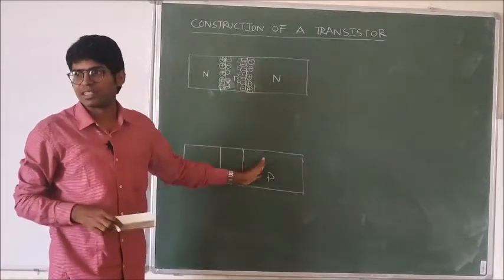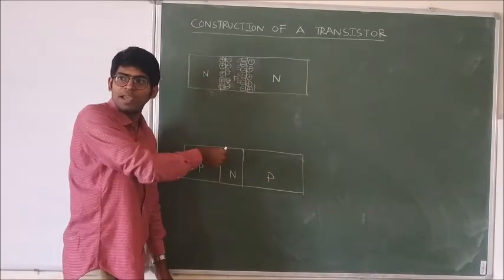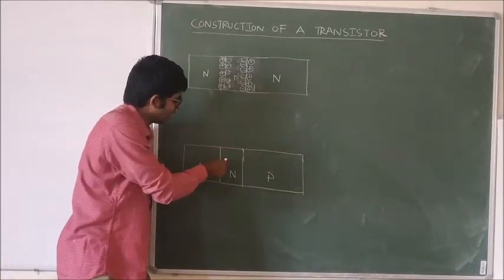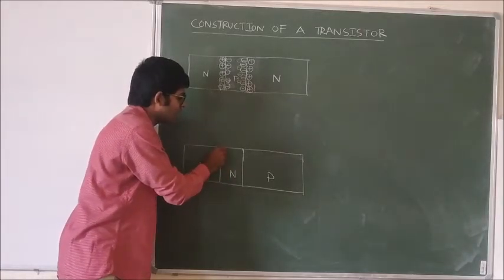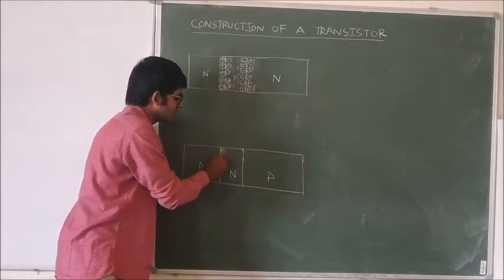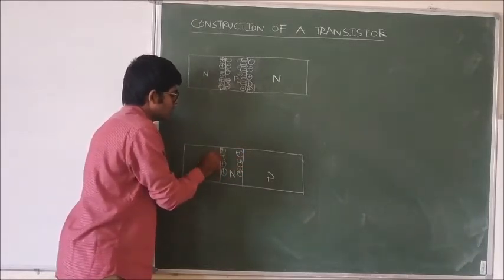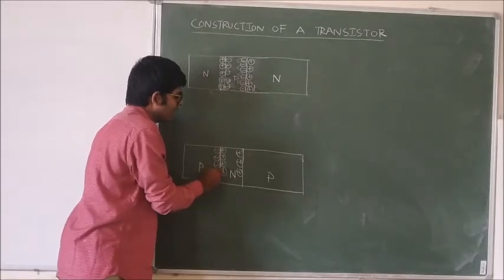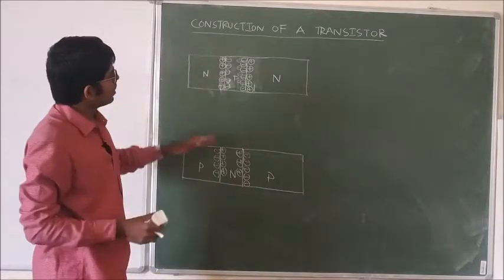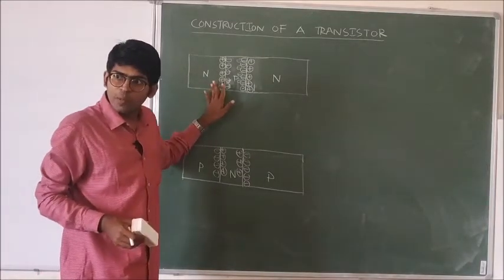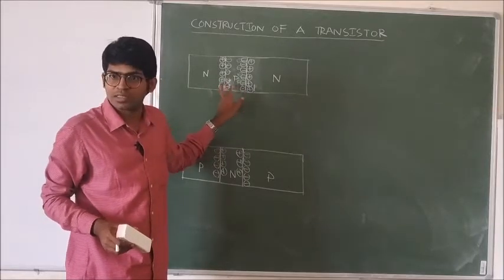Similar behavior is observed in the PNP transistor. Here the depletion region is wider in the base, and at the depletion region in the base region the ions observed are negatively charged, while in the emitter the ions are negatively charged as well. So we can observe two depletion regions here.